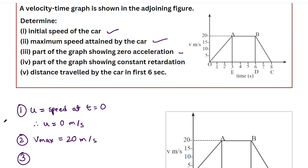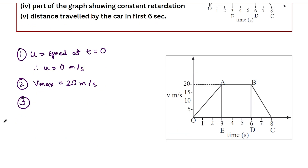The third part asks us to identify the part of the graph showing zero acceleration. Acceleration represents the change in velocity with respect to time, so zero acceleration means velocity is not changing with respect to time. Looking at the graph, the only section where velocity has a constant value for increasing values of time is the section between points A and B — that section shows zero acceleration.